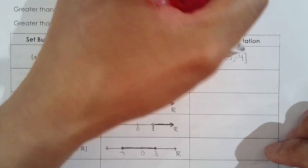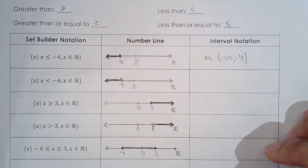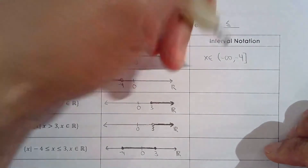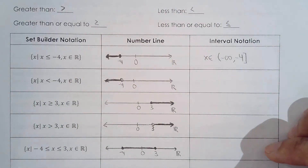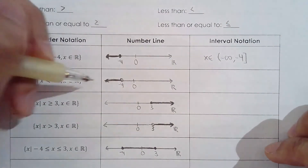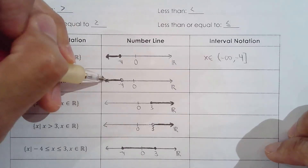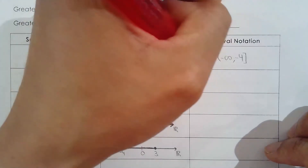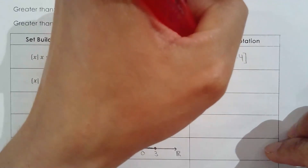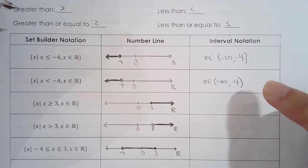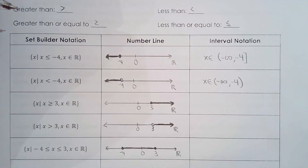Square bracket when you want to include the endpoint and round bracket when you don't. Around infinity and negative infinity it must be a round bracket because you can't close it off — numbers never end. So for x less than negative 4: negative infinity to negative 4 with a round bracket, because we don't want to include negative 4 as part of our interval.